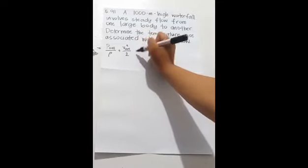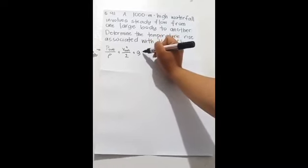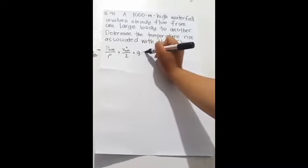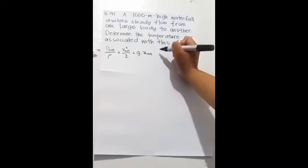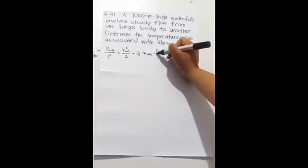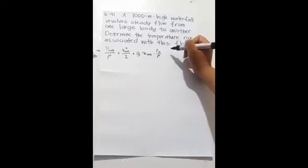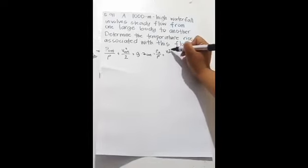Z out is equal to P in over density plus V in squared over 2 plus G times Z in minus.